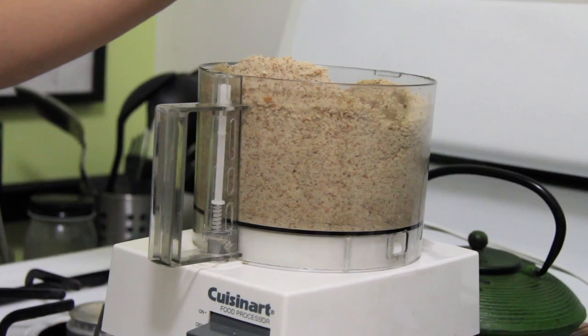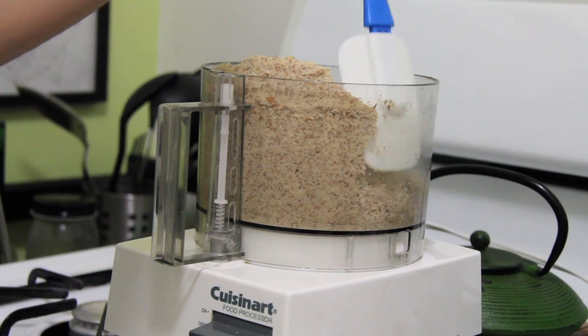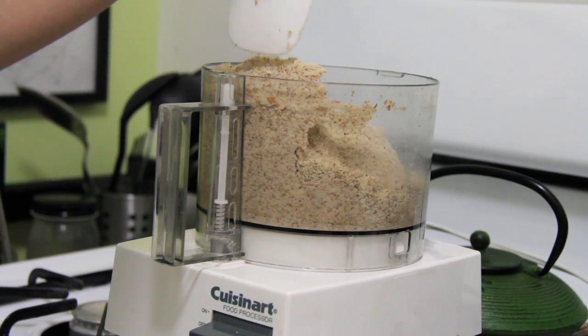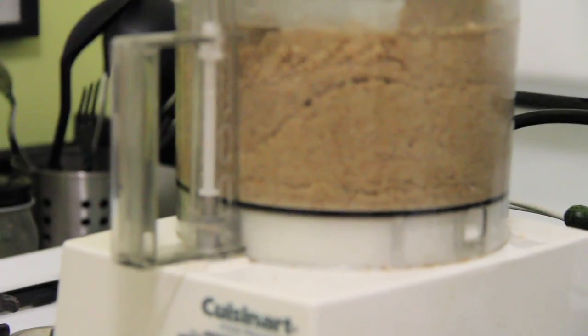Every few minutes you'll need to stop the processor to scrape down the sides and even out the mix. About halfway through 20 minutes some of the almond oils will be released and your mix will turn into a ball moving around the processor.